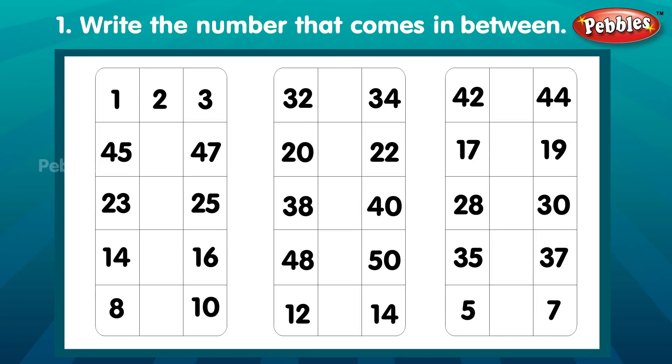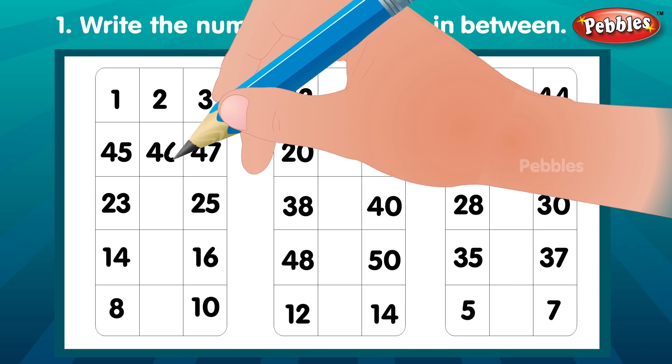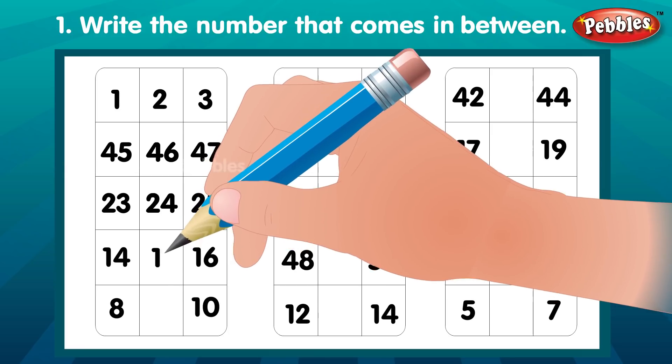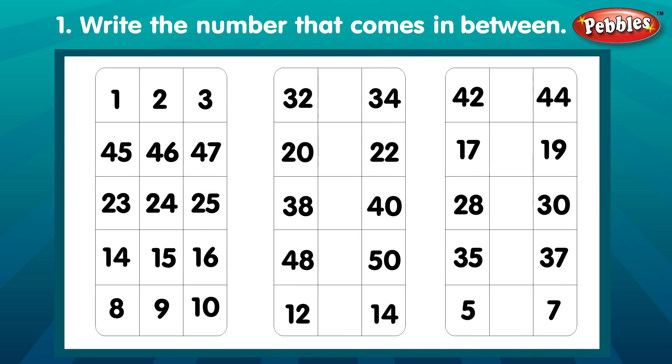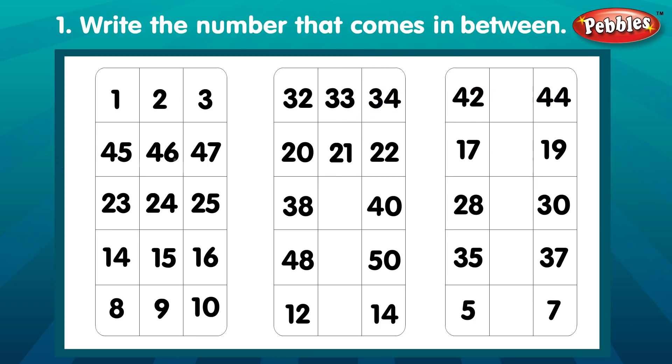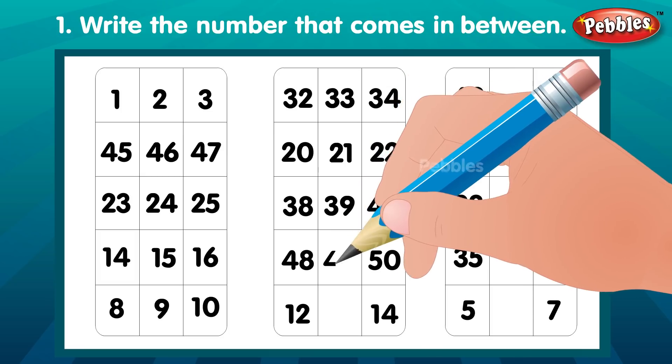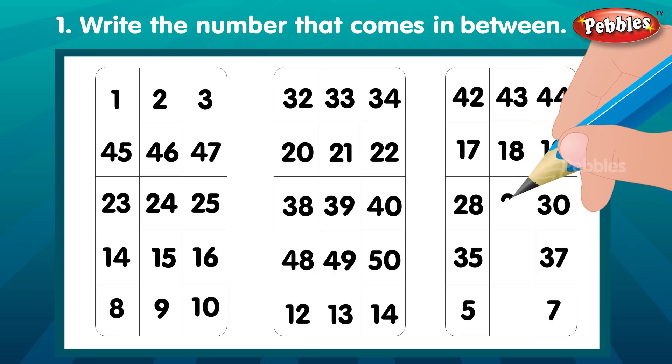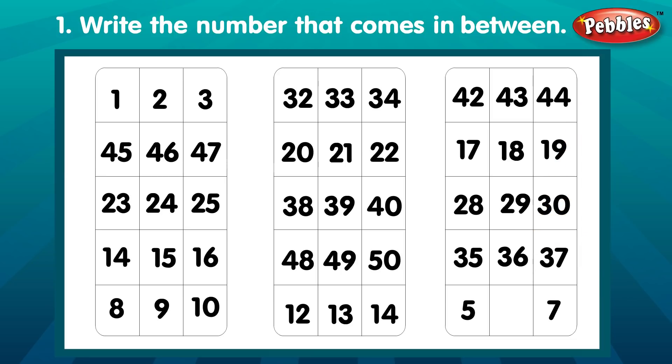Write the number that comes in between. Forty-six. Twenty-four. Fifteen. Nine. Thirty-three. Twenty-one. Thirty-nine. Forty-nine. Thirteen. Forty-three. Eighteen. Twenty-nine. Thirty-six. Six.